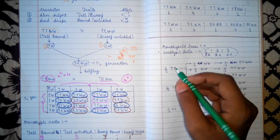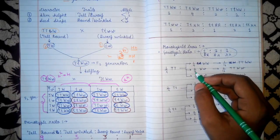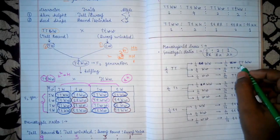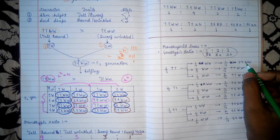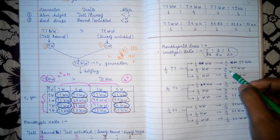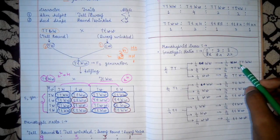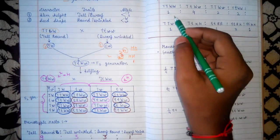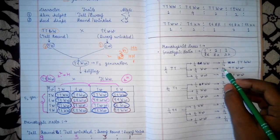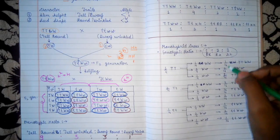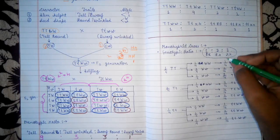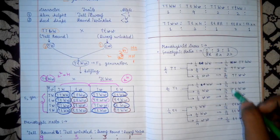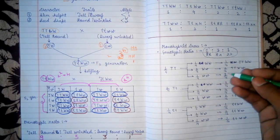We multiply the fractions — for example, 1/4 multiplied by 1/4 comes out to be 1/16, and we write capital T capital T capital W capital W here. Like this, we multiply all combinations. Without counting alleles manually, we get the genotypic ratio: 1/16 gives us 1, 2/16 gives us 2, and so on. Both methods give the same genotypic ratio.